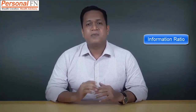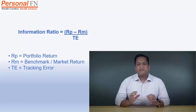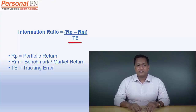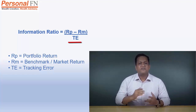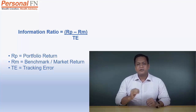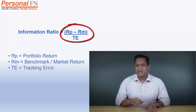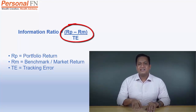Talking about the sixth ratio, that is the information ratio. The information ratio helps measure the fund's returns above the returns of the benchmark index and even takes into account the volatility encountered to generate those returns. It will help you measure the fund manager's ability to consistently generate benchmark-beating returns. The tracking error used in the calculation of the information ratio helps assess the consistency. The tracking error of the fund is the deviation of the difference between the fund's returns and the index returns. You can calculate the information ratio of the fund using the formula: (RP − RM) ÷ TE, where RP is the portfolio return, RM is the market or index return, and TE is the tracking error.